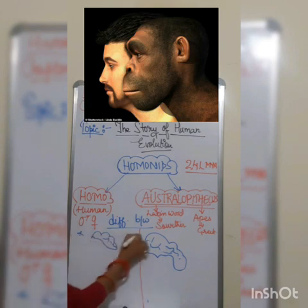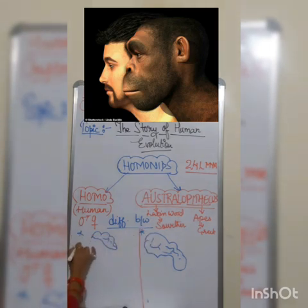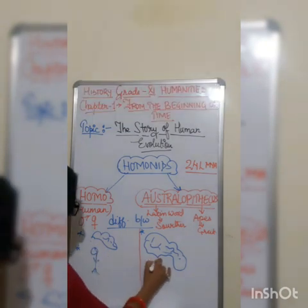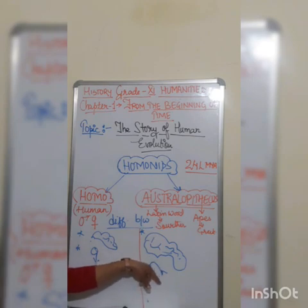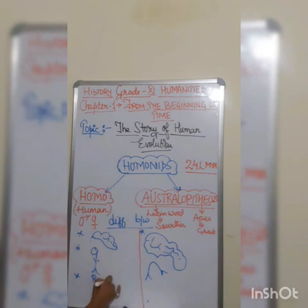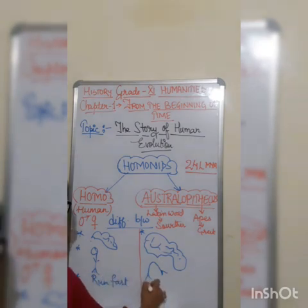The second feature of homo is that they used to walk on two legs and they used to bend their body. Another feature differentiating homo and australopithecus is running speed — homo used to run very fast, whereas the running capacity of australopithecus is slow.